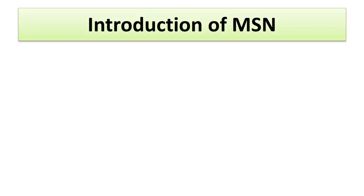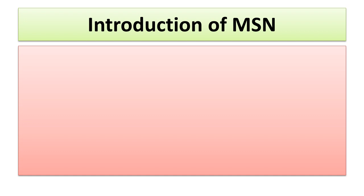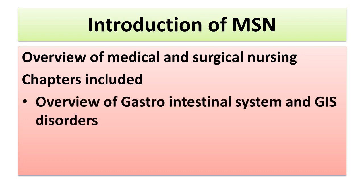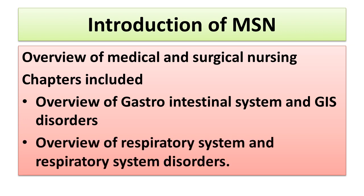Introduction of medical and surgical nursing — first of all we have to give you an overview of the chapters included in this course. These include the overview of the gastrointestinal system and GI disorders, and the overview of the respiratory system and respiratory system disorders.